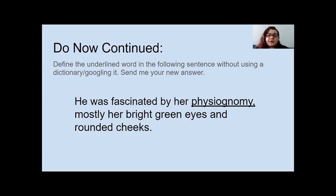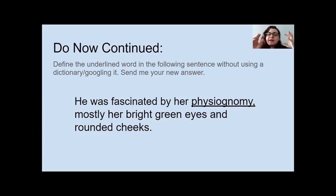I'm getting answers like 'her physical appearance.' The actual definition of physiognomy is 'face' — he was fascinated by her face, mostly her bright green eyes and rounded cheeks. But the best part about using context clues is that the definition does not have to be exact. What you're trying to do is take the information around a difficult word and figure out what it means based on what else is in the sentence or surrounding sentences. It just has to help you understand what the author is trying to say.